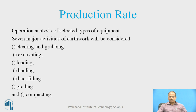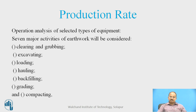The analysis of the production rate is the aim of this OER and the operational analysis of selected types of equipment is utmost essential. There are seven major activities of earthwork: clearing and grubbing, excavating, loading of excavated material, hauling and transportation from the work site to dump site and vice versa, back filling, grading, and compaction — requiring many types of equipment.